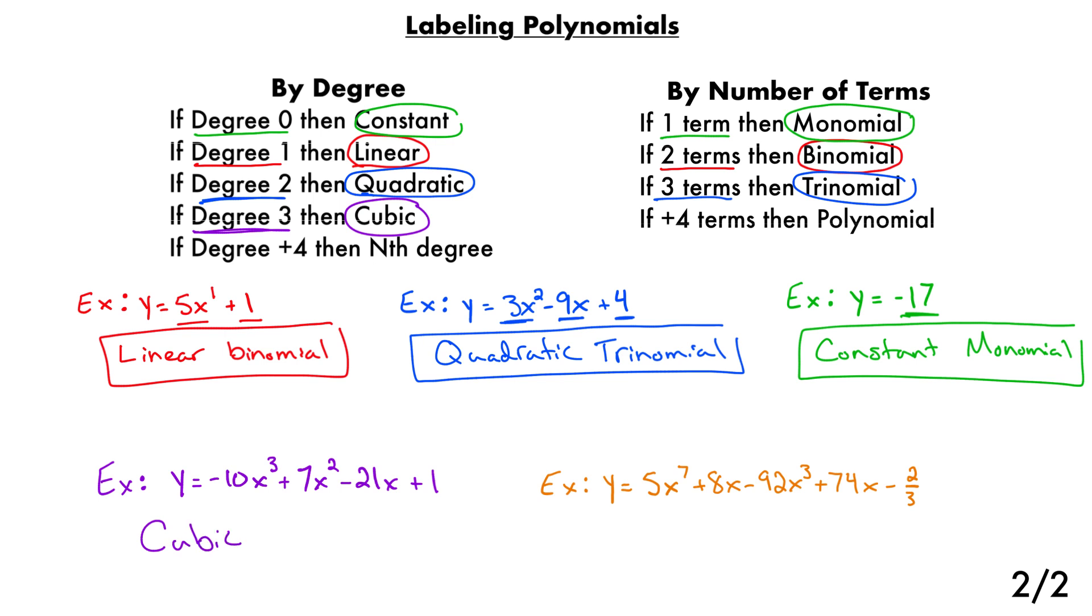And then we're going to look at the number of terms. There's a term here, a term here, a term here, and a term here. So there are four terms in this one. Now, anytime you have four or more terms, we simply refer to that as a polynomial. We don't have special names other than for monomial, binomial, trinomial. Anything with four or more terms, we just call it a polynomial. So this is a cubic polynomial.